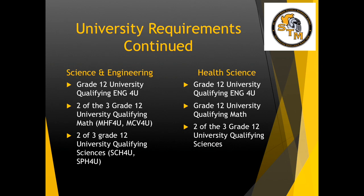If you are interested in science or engineering type programs, Grade 12 university qualifying English is required, along with 2 of the 3 Grade 12 university qualifying math courses — usually Functions and Calculus — and 2 of the 3 Grade 12 university qualifying sciences, usually Chemistry and Physics for engineering. If it is a biology-based program, then it will be Biology. Health science programs require Grade 12 university qualifying English, Grade 12 university qualifying math — usually any one of the 3 math courses — and 2 of the 3 Grade 12 university qualifying sciences.